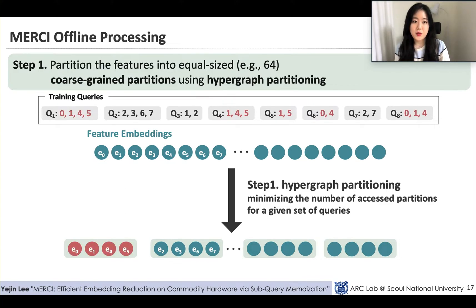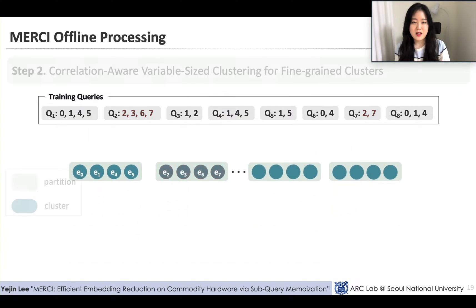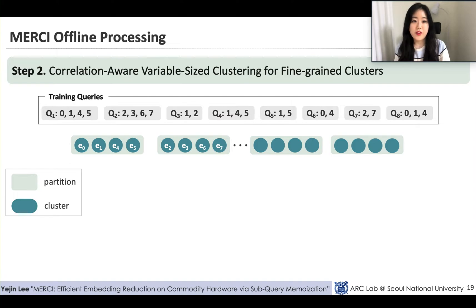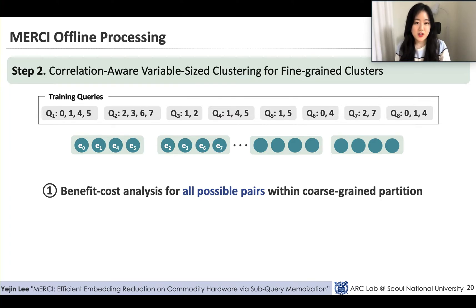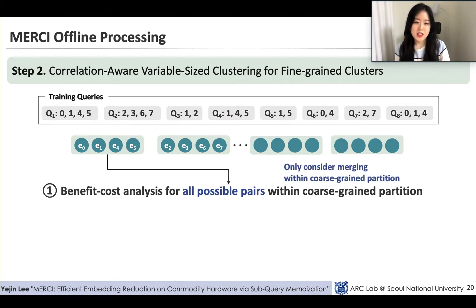Features 0, 1, 4, and 5 are assigned to the first coarse-grained partition, and similarly features 2, 3, 6, and 7 are assigned to the second. The second stage is correlation-aware variable-sized clustering. With coarse-grained equal-sized partitions from step 1, MERCI constructs fine-grained clusters within each partition using a novel clustering algorithm that merges frequently co-appearing features into a single cluster. The basic idea is to evaluate the benefit and cost for merging all possible pairs of features within each coarse-grained partition, and select the pair that provides the most benefit per unit cost and merge them.